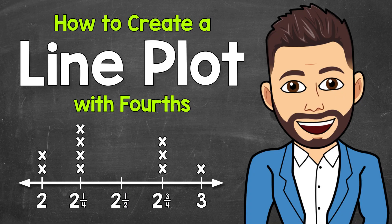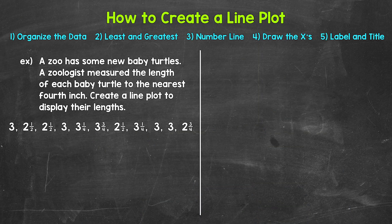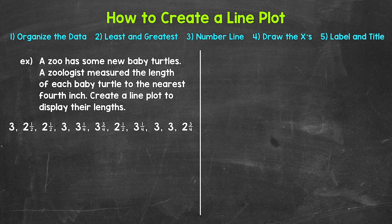Welcome to Math with Mr. J. In this video, I'm going to cover how to create a line plot involving fourths. A line plot is a type of graph that displays data along a number line. We use X's above the number line to show how often something occurs. In our example, a zoo has some new baby turtles, and a zoologist measured the length of each baby turtle to the nearest fourth inch. Create a line plot to display their lengths.